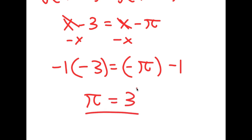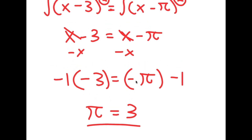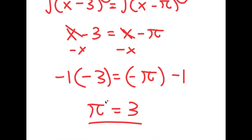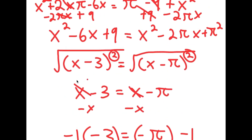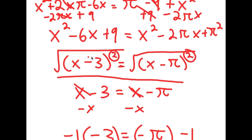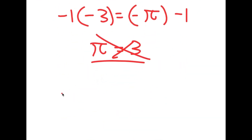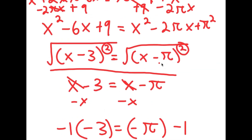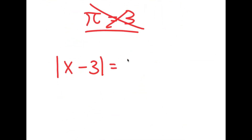So there you have it — I just proved that pi is equal to 3. But obviously we know that pi is not equal to 3, so where did I go wrong? Well, I actually went wrong on the step where I said the square root of (x minus 3) squared and the square root of (x minus pi) squared equal x minus 3 and x minus pi respectively. This is actually not true. The square root of (x minus 3) squared isn't equal to x minus 3 — it's equal to the absolute value of x minus 3. And same goes for the square root of (x minus pi) squared: it's equal to the absolute value of x minus pi.